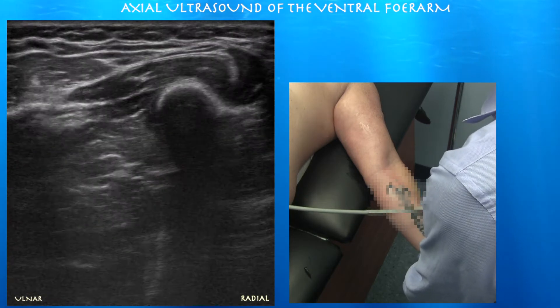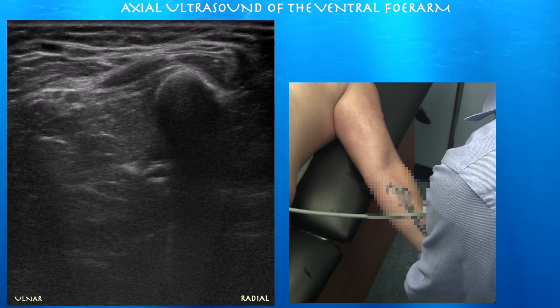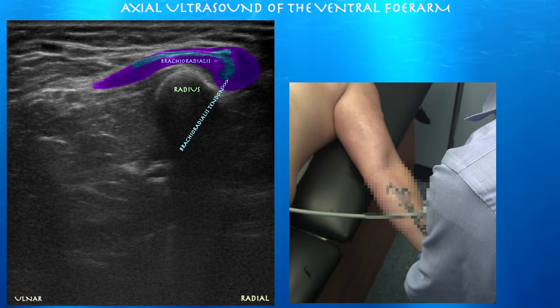Now we're just going towards the wrist. Here we can start seeing the tendon form of the brachioradialis as it inserts on the distal aspect of the radius.